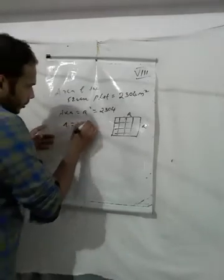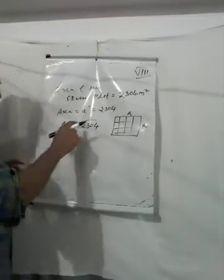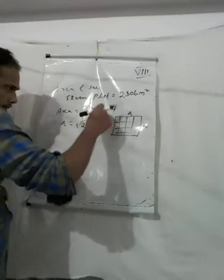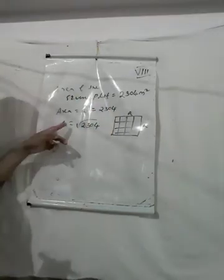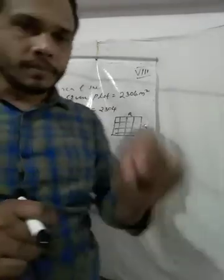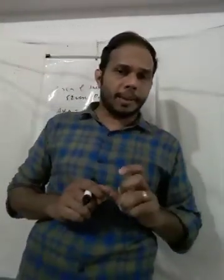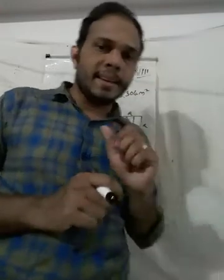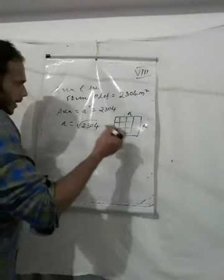Then what is a? a equals the square root of 2304. Since a squared equals 2304, then a equals square root of 2304. You already know the prime factorization and the division method. Now we can use the division method for finding the square root.